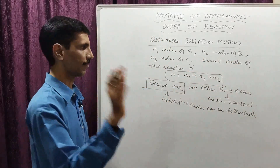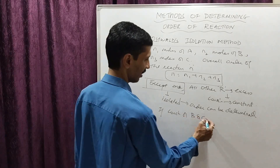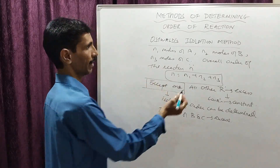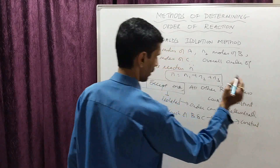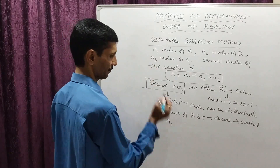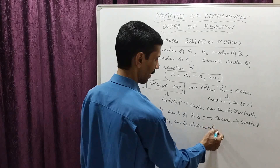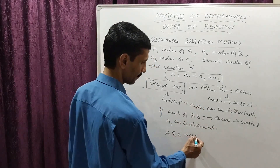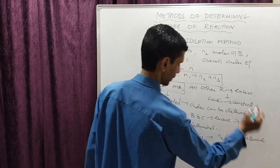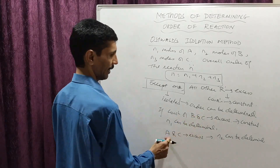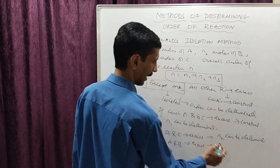If A and C are taken in excess, then n2 can be determined. Similarly, if A and B are taken in excess, then n3 can be determined. Each time you isolate one reactant by keeping the others at excess concentration, you find the individual order for that isolated reactant.